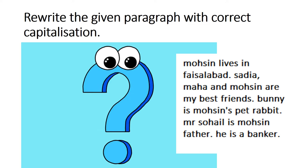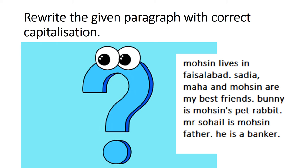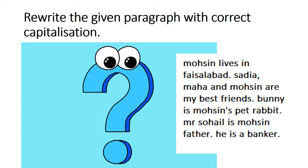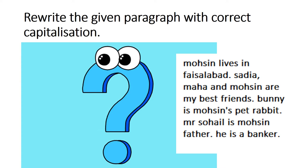यह paragraph है: Mohsin lives in Faisalabad. Sadiya, Maha and Mohsin are my best friends. Bunny is Mohsin's pet rabbit. Mr. Sohail is Mohsin's father. He is a banker. इस paragraph को हमने Rewrite करना है और इसमें capital words add करना है, जहां पर add होते हैं.